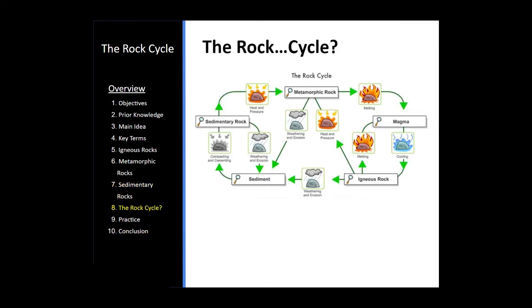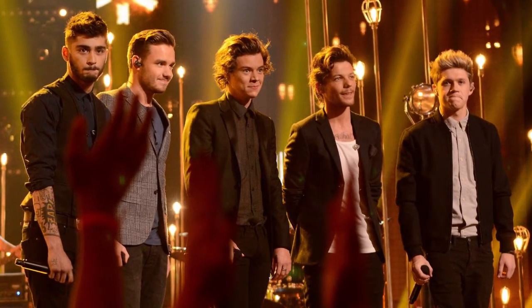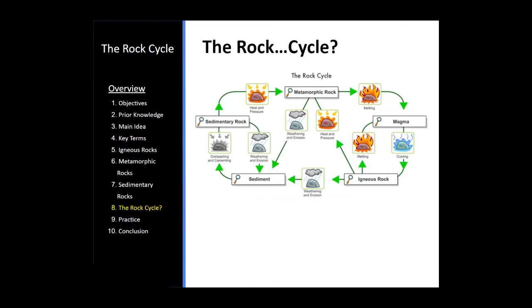So is the rock cycle really a circle? I'd like to make the argument that it really isn't. Any rock could become any other type of rock and there really is no one direction to it. So when any rock undergoes the process that creates the other type of rock, it will become that kind of rock.